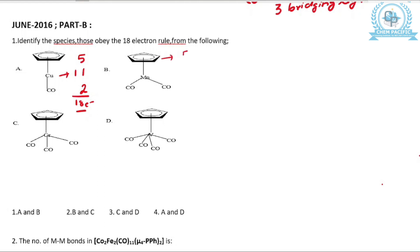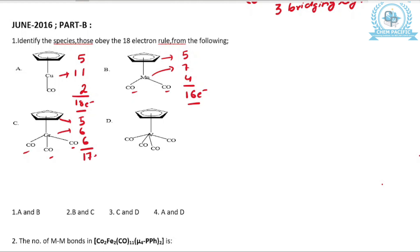For species B: CP is again in η5 mode. Manganese has valence electrons 7, and it has 2 CO, so from 2 CO it is 2 × 2 = 4. Total: 5 + 7 + 4 = 16 electrons — this is only 16 electrons. For species C: CP is also in η5 mode — that is 5. Chromium has valence electrons 6, and there are 3 CO, so 3 × 2 = 6. Total: 5 + 6 + 6 = 17 electrons.